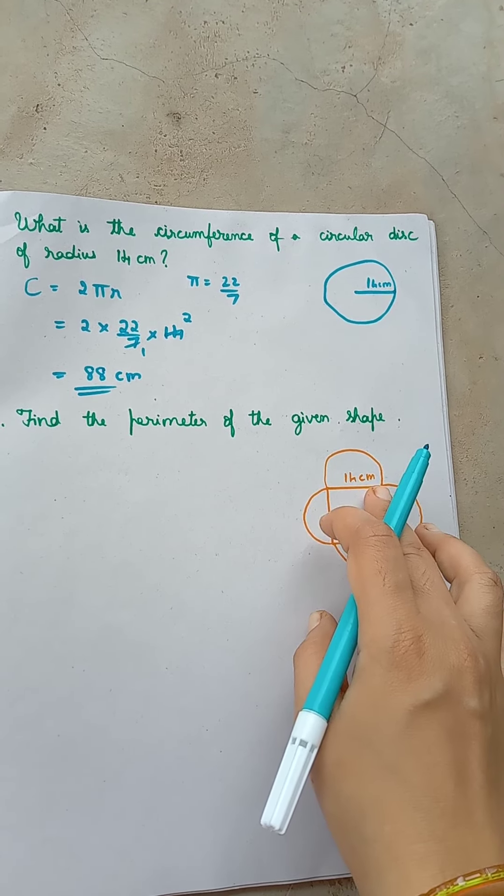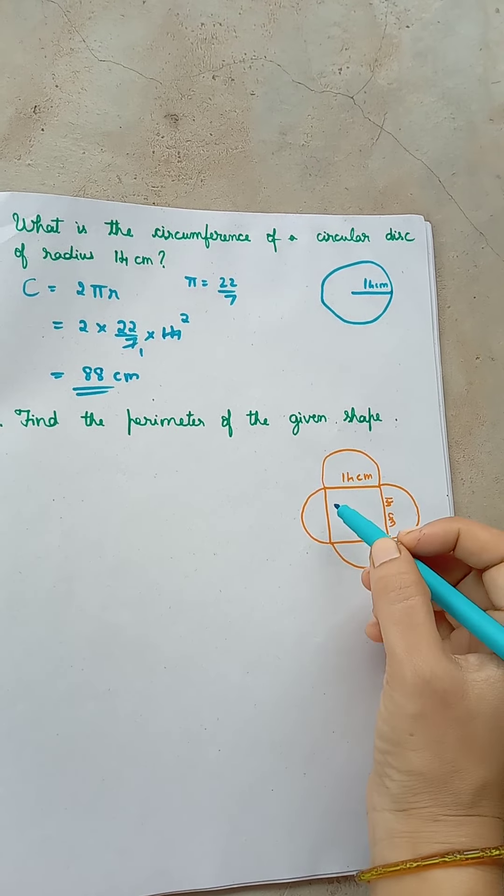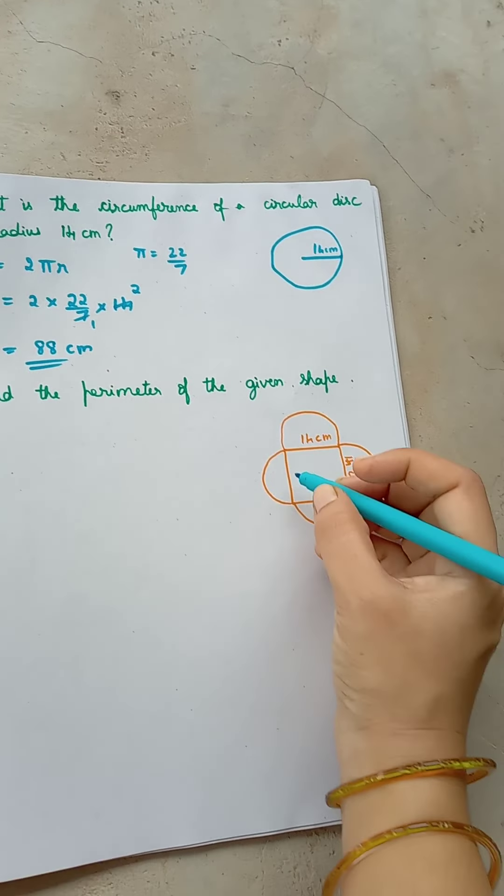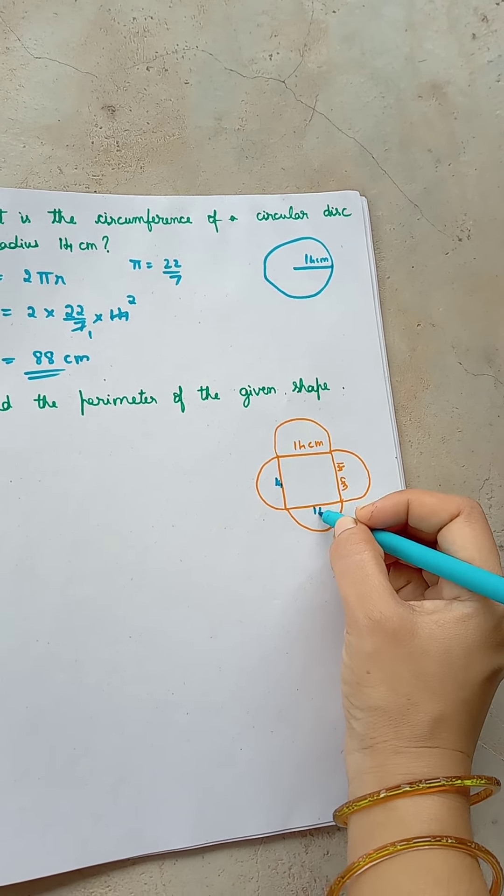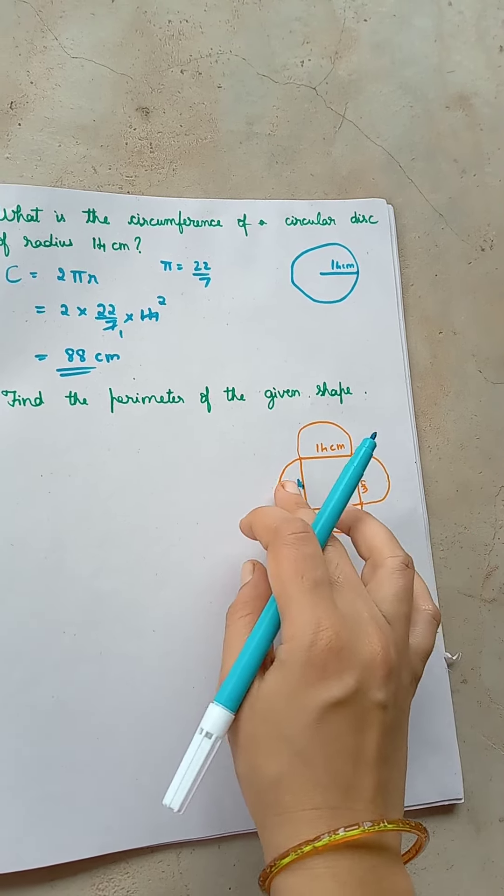The diameter is given for each semicircle, that is 14. Even here it is 14 and 14. So these are the diameters.